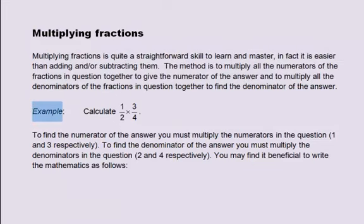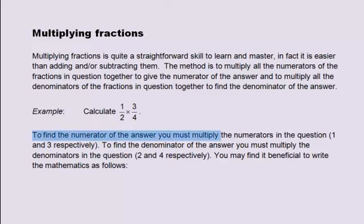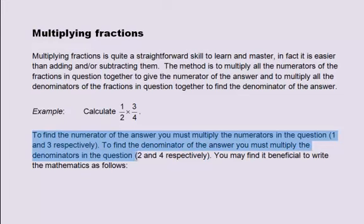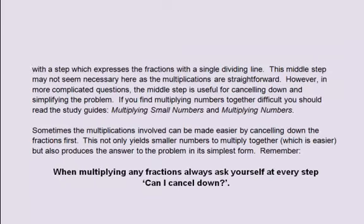For example, calculate one half multiplied by three quarters. To find the numerator of the answer, you must multiply the numerators in the question — 1 and 3 respectively. To find the denominator of the answer, you must multiply the denominators in the question — 2 and 4 respectively. You may find it beneficial to write the mathematics as follows. Starting with the question: 1/2 multiplied by 3/4.